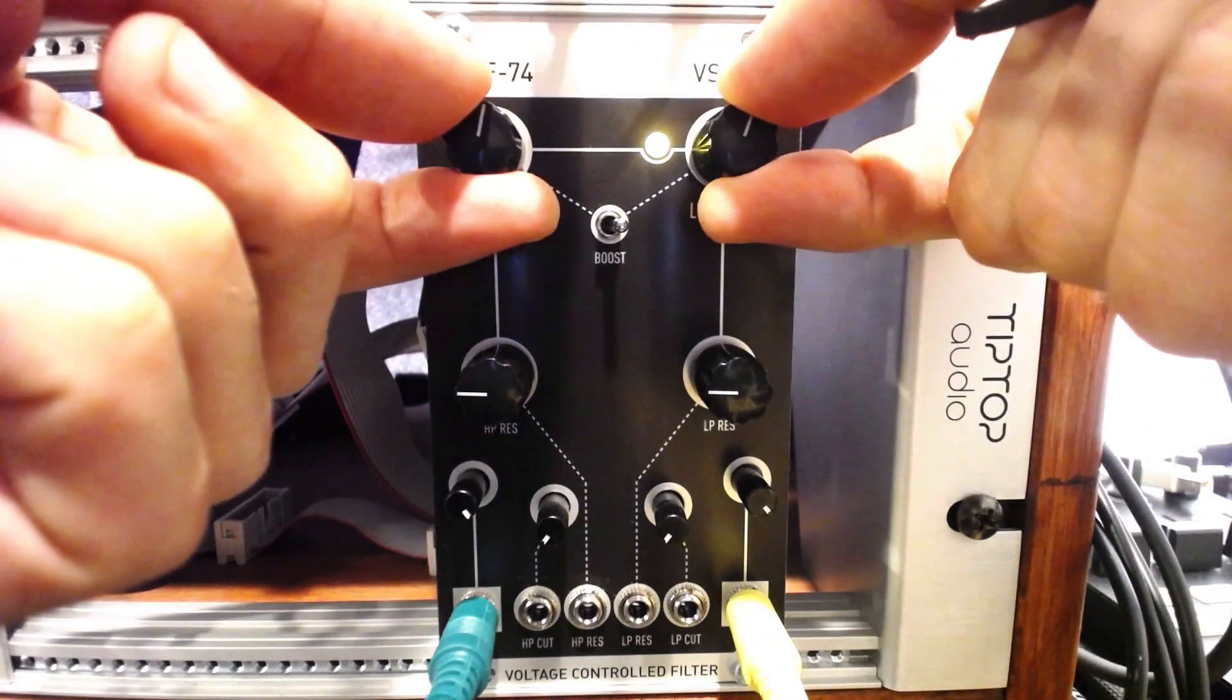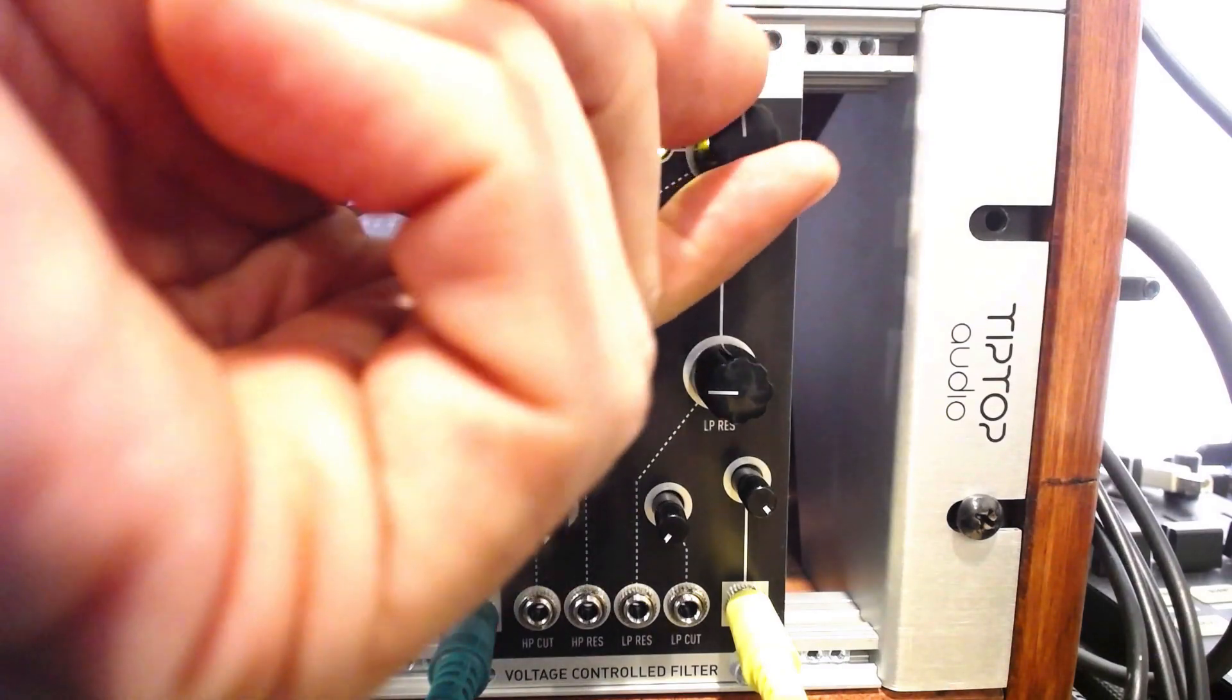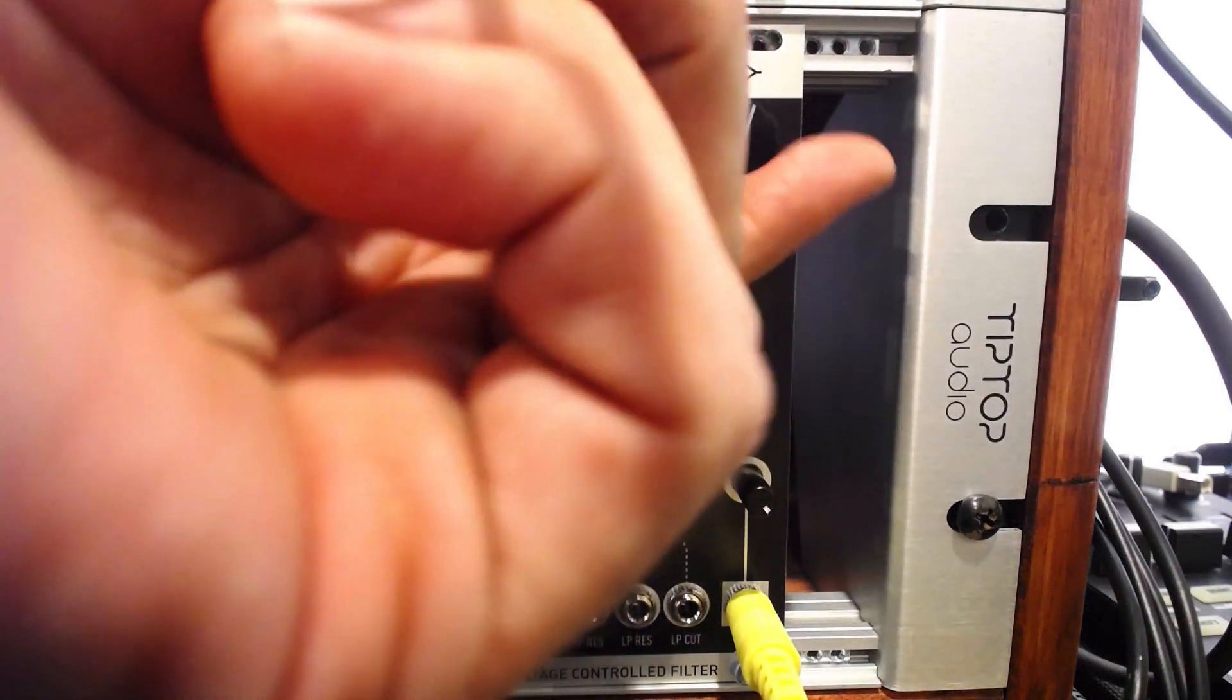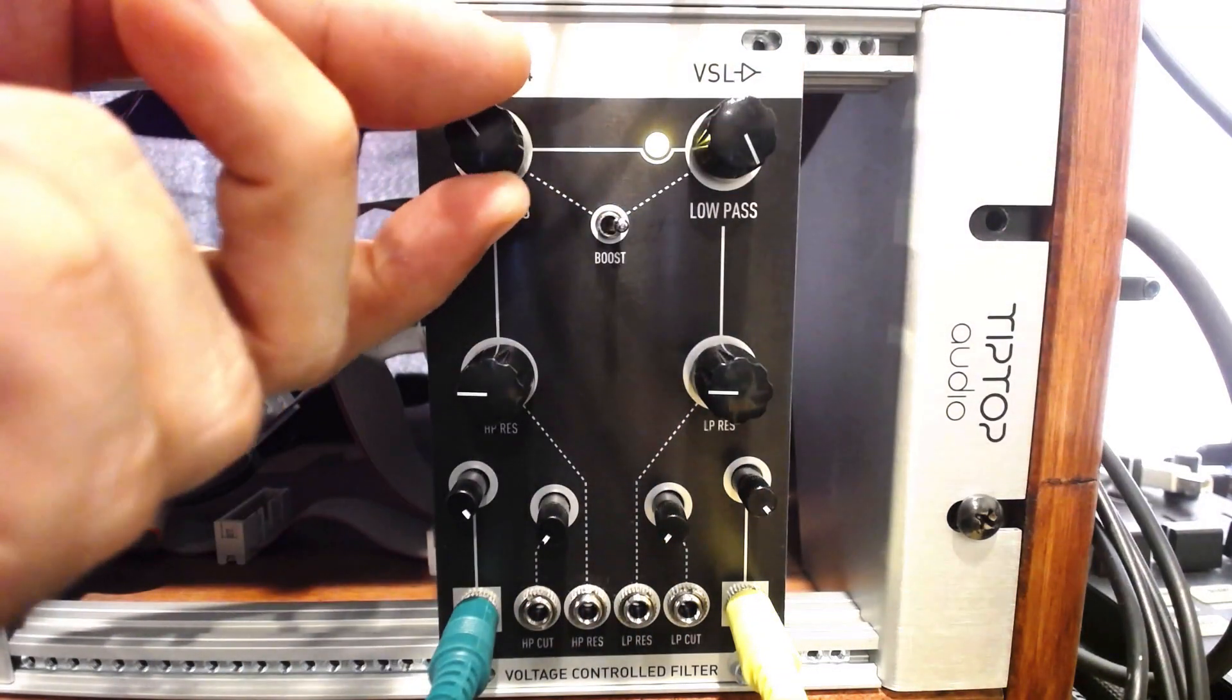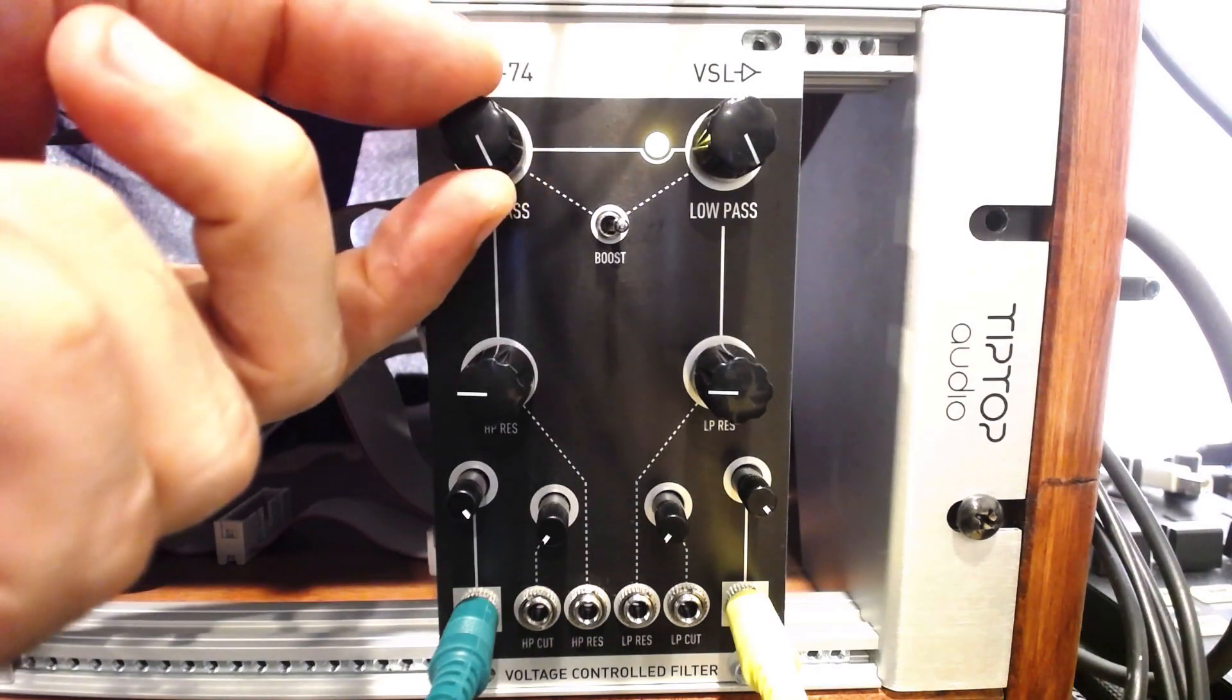Let's try it with the Vintage Synth Labs VCF-74. This module is a sort of variable bandpass filter with separate high and low-pass filters that can be modulated and controlled independently.